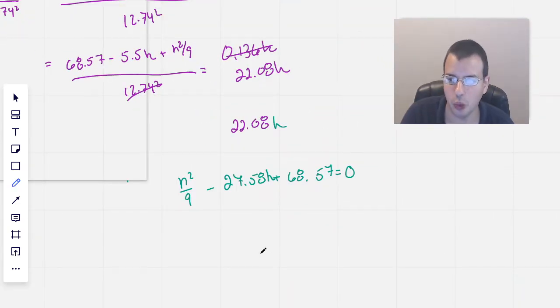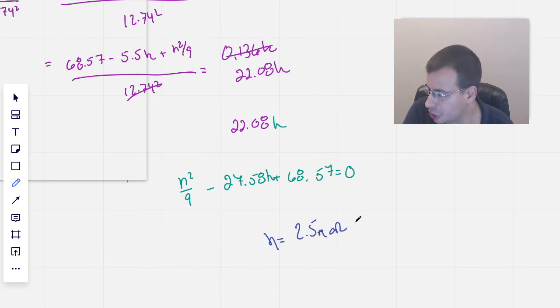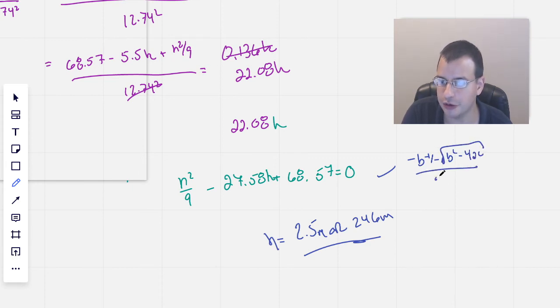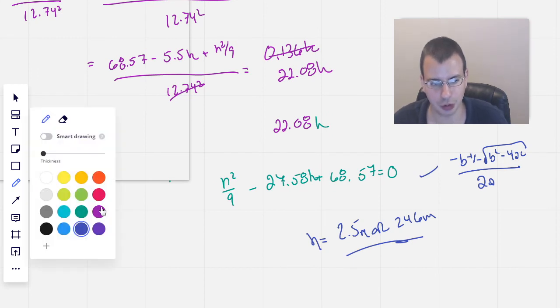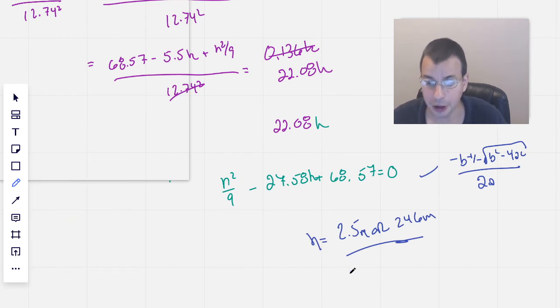Plugging this into Wolfram, we get two answers, H equals 2.5, or, and this is in meters, 245, and 246 meters. And we could do this by hand using quadratic, negative B, plus or minus B squared, minus 4AC, square rooted, all over 2A. That's why we have the two answers here. And we could do it by hand, but it's easier and more accurate if I just put it into Wolfram. This is the two answers we get, 2.5 meters, or 246 meters.